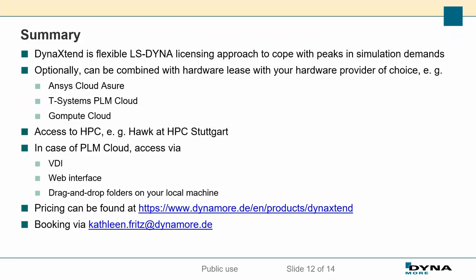That's it for this webinar. As usual, the video will be put online on YouTube and the slides will be found on our webpage together with the example. Once you book Dyna Xtend, you may use this as a first approach to get started. In general, Dyna Xtend is a very flexible LS-Dyna licensing approach designed to be really fast with booking LS-Dyna into hardware. You can use different hardware vendors or hardware lease providers and have access to high-performance computing centers with different access policies — such as the PLM cloud from T-Systems with virtual desktop, web interface, and drag-and-drop folders on the local machine.